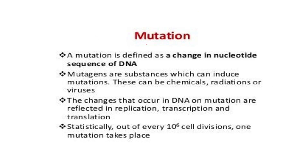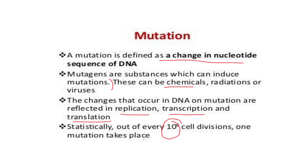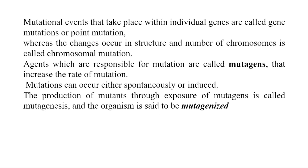Mutation is defined as a change in the nucleotide sequence of the DNA. Mutagens are substances which can induce mutation. Mutagens may be chemical, radiations, or viruses. The changes that occur in the DNA as a result of mutation can be reflected in replication, transcription, and translation. Statistically, out of every 10 to the power of 6 cell divisions, one mutation takes place.